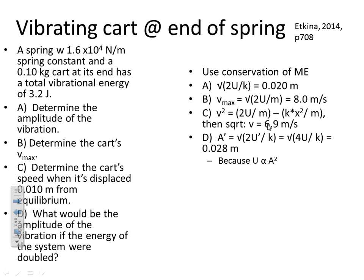Make sure you understand these relationships expressed in variables — how velocity relates to potential energy, how velocity relates to mass, and pay attention to squares and square roots. In part C we cannot zero out the spring potential energy term because the cart has a nonzero displacement, so both the spring potential energy at that position and the remaining kinetic energy must be accounted for in the conservation equation.